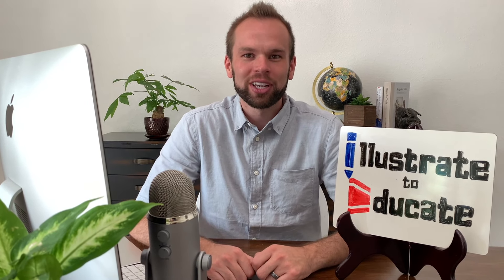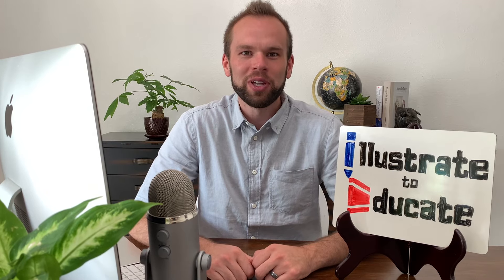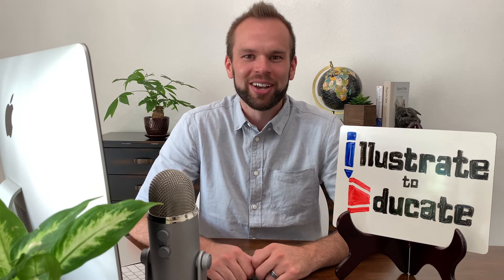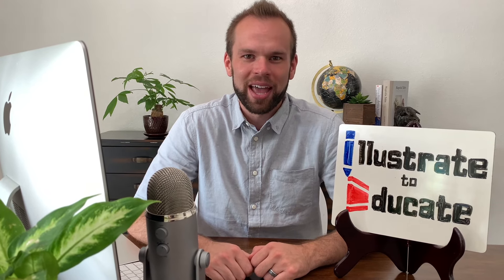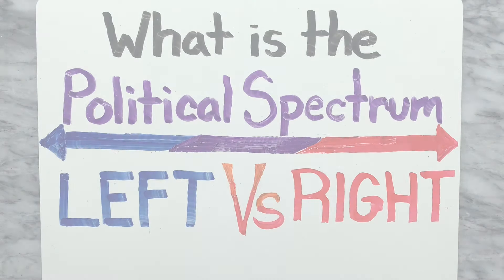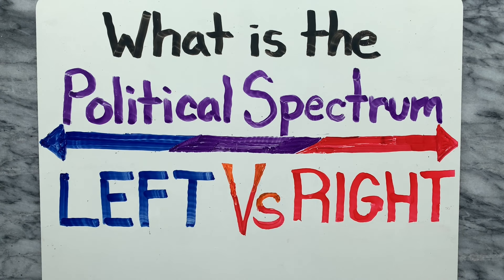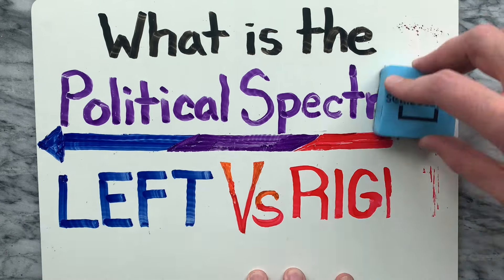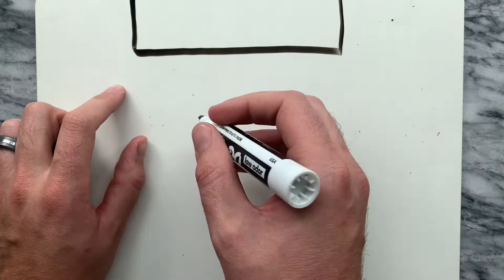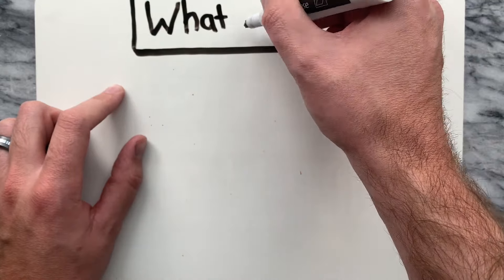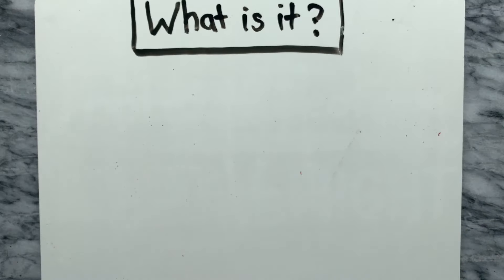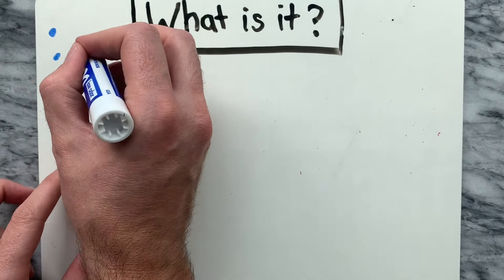Hey, it's Dan Zimmerman. Welcome to Illustrate to Educate. Don't forget to subscribe for weekly objective videos on topics that matter. Have you ever wondered what a political spectrum is, or what left-wing and right-wing mean? In this video, I'll explain all of this and more in a simple and objective way.